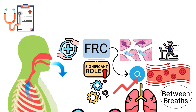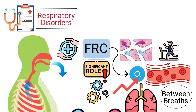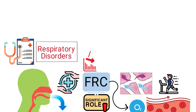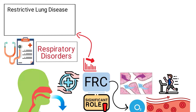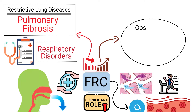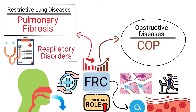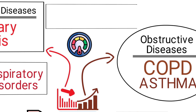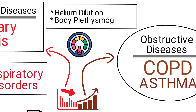Clinical assessment of FRC can be crucial in diagnosing and managing various respiratory disorders. A decreased FRC may indicate restrictive lung diseases like pulmonary fibrosis, while an increased FRC could be a sign of obstructive diseases like COPD or asthma. The FRC is often measured using techniques like helium dilution or body plethysmography.